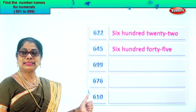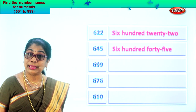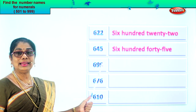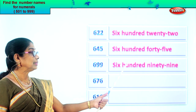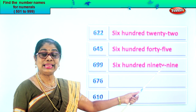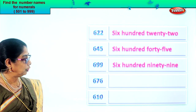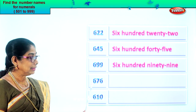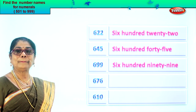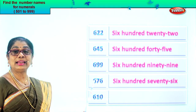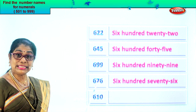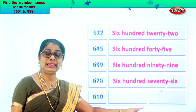Next we have six, nine, nine. Nine in the ones place and nine in the tens place, six in the hundreds place. Six hundred ninety-nine. So we write first six hundred, then we write ninety-nine — six hundred ninety-nine. Next numeral: six, seven, six. Six in the ones place, seven in the tens and six in the hundreds place. Six hundred seventy-six. First we write six hundred, then we write seventy-six. Six hundred seventy-six.